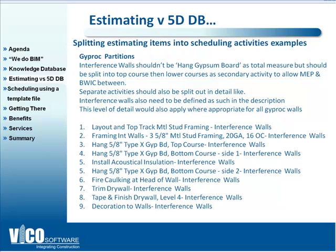Take drywall partitions — specifically interference walls involving interference with MEP installation. In a typical bill of quantities you'd probably have one item for the drywall board. But when you come to schedule it, you've got to split it into more detail, with probably the top course going in at one time and then the lower courses as a secondary activity to allow MEP and builder's work connections in between. So you would have: layout and top track, framing the internal walls, hanging the top course, then the bottom course first side, insulation, then the second side, and then fire-stopping, trimming, tape and finish, and decoration afterwards.